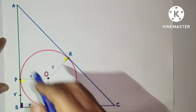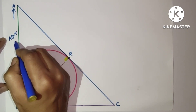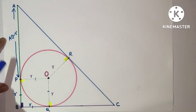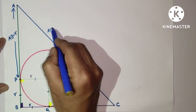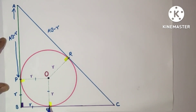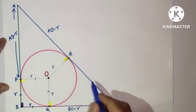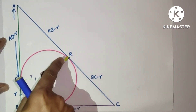AP is equal to AB minus r. Also, AP equals AR because two congruent tangents can be drawn from an exterior point, so AP = AR = AB minus r. Similarly, QC will be BC minus r, and CQ equals CR, so CR is also BC minus r.